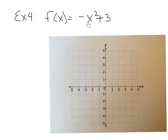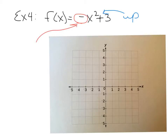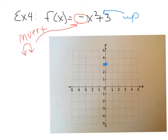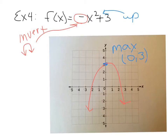Example 4 is on page 244: f of x equals negative x squared plus 3. The plus 3 is a shift up 3 units, but we also see a negative sign in front of x squared. This negative sign will invert your parabola, so now it opens down instead of up. The vertex shifts up 3 units and is now a maximum, with coordinates 0, 3. The axis of symmetry is still x equals 0. Whenever you see a negative coefficient on x squared, it inverts the parabola and makes it open down.